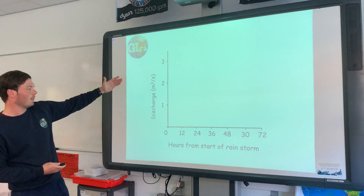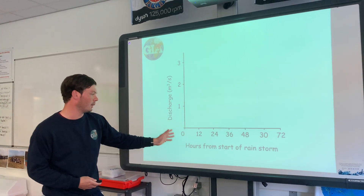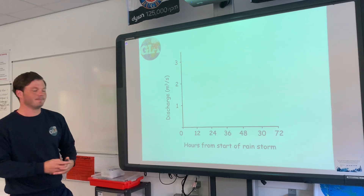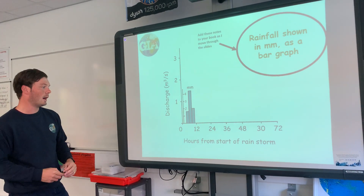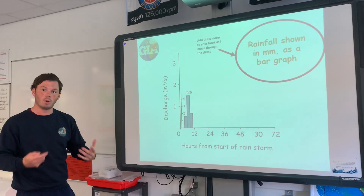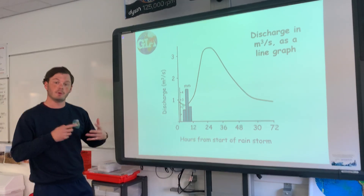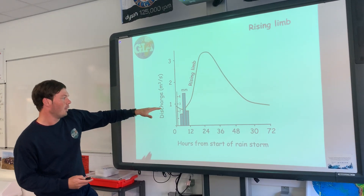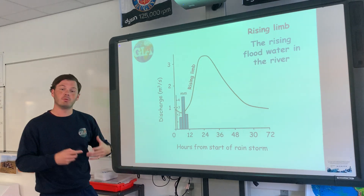On this axis we've got our discharge. On this axis we've got the hours from the start of the rainstorm, going 0, 12, 24 — and so on up to 60. We've got this bar chart which shows our amount of rainfall that's happening — the amount of rainfall that has occurred at each point in time. We then have our discharge shown as a line graph, the amount of water flowing through a river. As we start to move along, the time that the water starts to increase and the discharge gets higher — this part of the line graph is known as the rising limb.